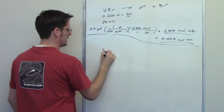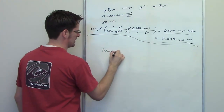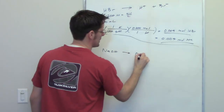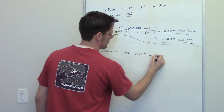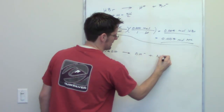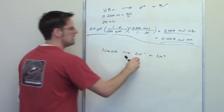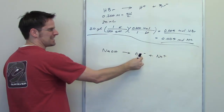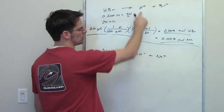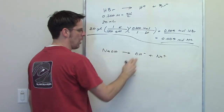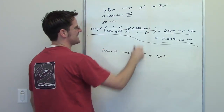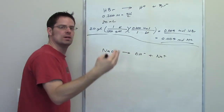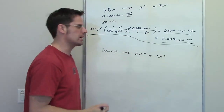Now we look at our sodium hydroxide. Sodium hydroxide dissociates to form OH- and sodium. Every time it releases an OH-, that OH- will neutralize an H+. So OH- attacks H+, and they combine to form neutral water.